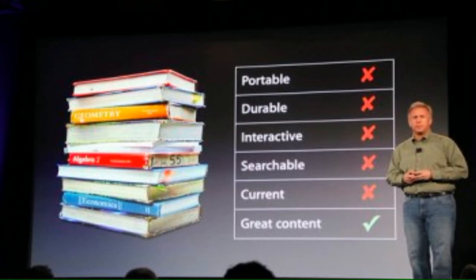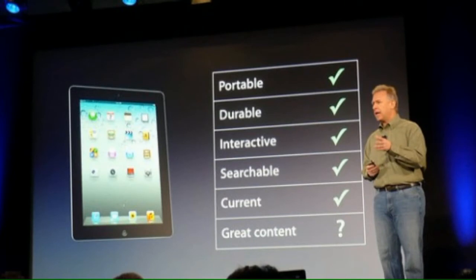As suggested by Phil Schiller, VP of Marketing for Apple, textbooks need to go electronic because traditional textbooks aren't portable, can be expensive, suffer wear and tear, aren't interactive, and you can't search them easily. On an iPad, textbooks are portable, durable with a good case, very interactive — with videos, pictures, 3D and interactive models — and you can search anything in the book. They can also be updated to always remain current.